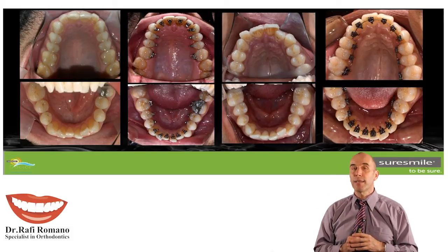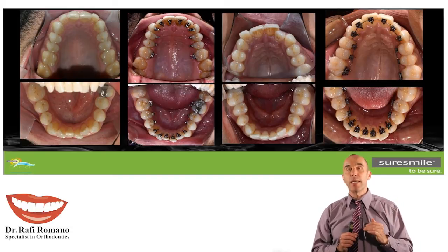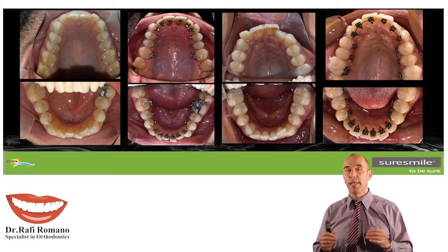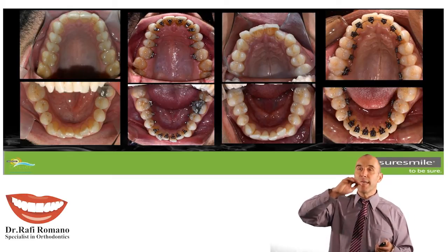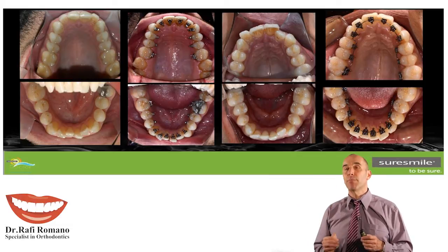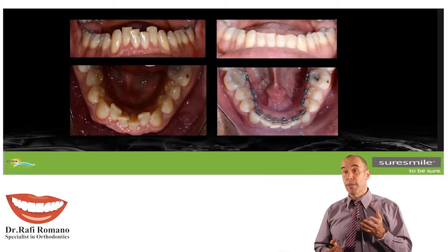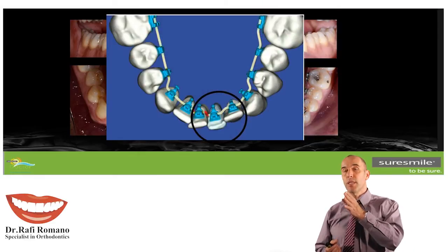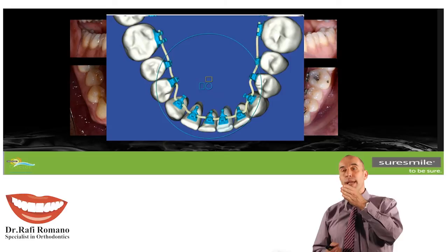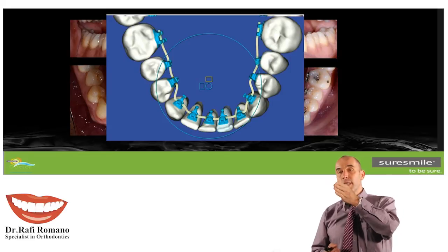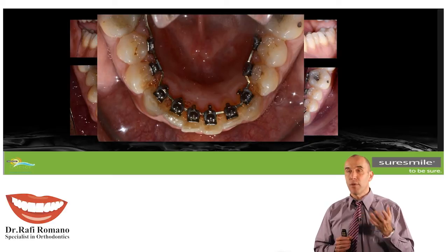We uprighted the teeth quite nicely in four or five months. But nowadays I don't use this virtual approach anymore. I place the brackets myself, as you can see on the model, and you can see the initial alignment I get before the scanning. This case is quite complicated. We did alignment, and you see that I get a stop sign. Very easily, we change the bracket position, we re-scan this tooth, and we use the SureSmile wire very easily.